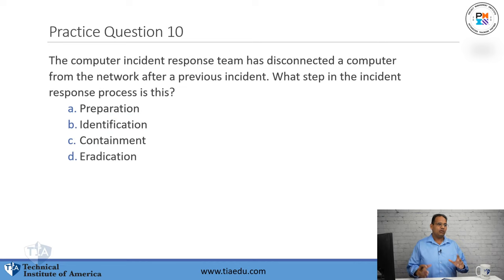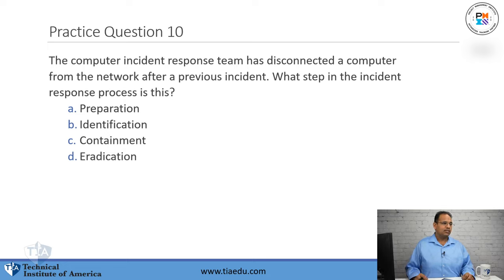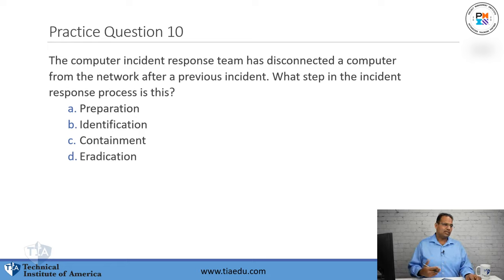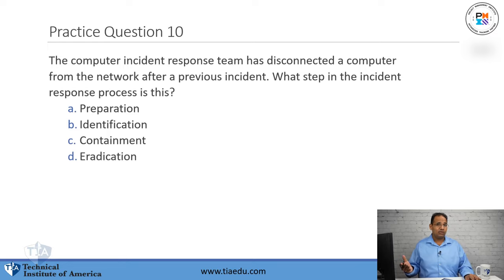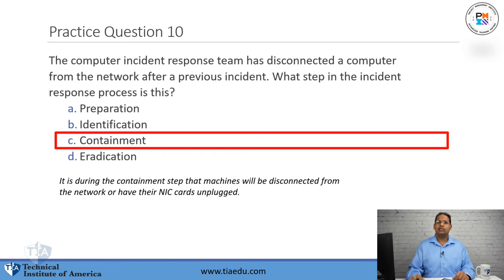Question ten: The computer incident response team has disconnected a computer from the network after a previous incident. What step in the incident response process is this? A, preparation. B, identification. C, containment. D, eradication. The answer is containment. By disconnecting from the network, what they're really doing is containing that system so that if it has malware, it won't spread throughout the entire network.